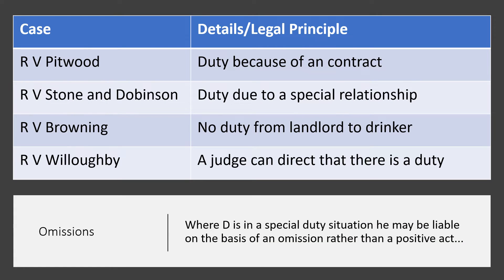Further examples of duty of care include Pitwood, where a duty arose from a contract when the defendant failed to close a level crossing causing death, and Stone and Dobinson, where a duty arose from a special relationship. In Browning, there was no duty from a landlord to a drinker who drank too much and died. In Willoughby, it was established that a judge can direct that there is a duty, and that direction will be sufficient for the jury.